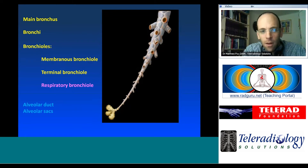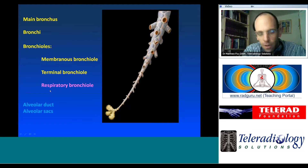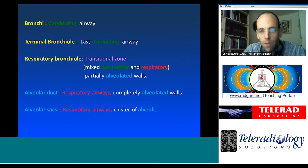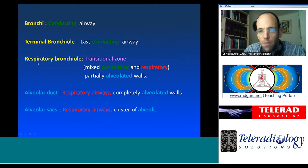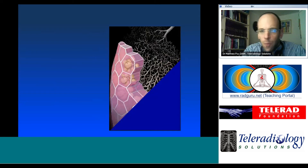Back to the conducting airways: the transition occurs along the respiratory bronchiole, which starts to participate not just in conduction but in the respiratory process, being partially bronchiolated and partially alveolated. The respiratory bronchiole is a transitional zone — mixed conducting and respiratory — as opposed to the alveolar duct, which is completely within the respiratory airways, leading into the alveolar sacs.